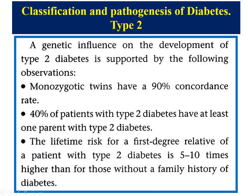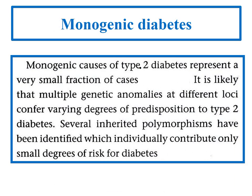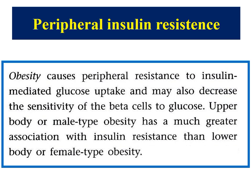The genetic influence on type 2 diabetes is supported by observations: monozygotic twins have a 90% concordance rate; 40% of patients with type 2 diabetes have at least one parent with type 2 diabetes; and the lifetime risk for a first-degree relative of a patient with type 2 diabetes is five to ten times higher than for those without a family history. Monogenic causes of type 2 diabetes represent a very small fraction of cases, and several inherited polymorphisms each contribute only small degrees of risk.